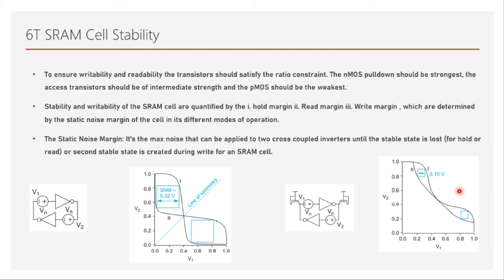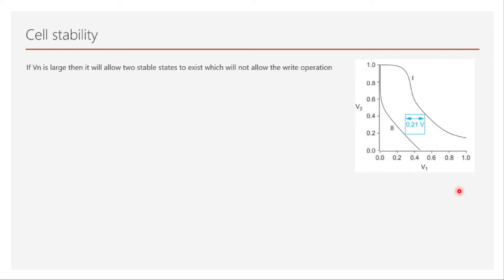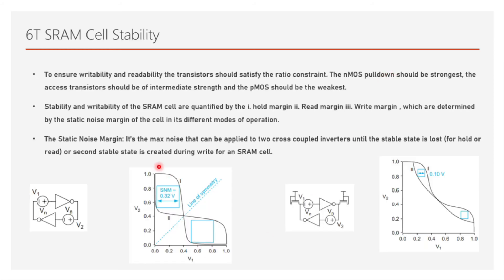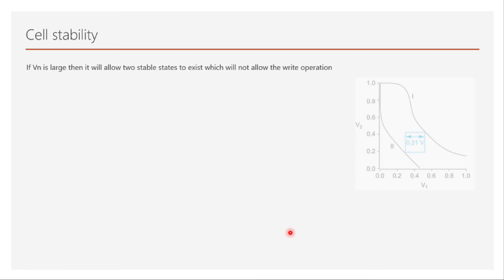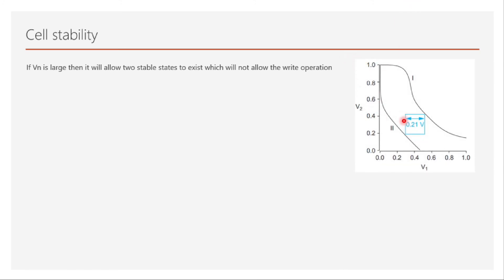The last margin is the write margin. When the cell is being written, the access transistor must overpower the pull-up transistor P to create a single stable state. If the PMOS transistor is allowed to pull the node up — while we are trying to pull it down through the bit-bar — then there will be two stable states, and we cannot write the desired value.